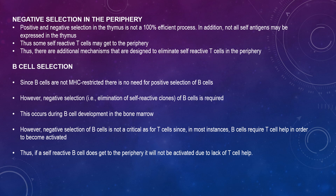If positive and negative selection in the thymus is not 100% efficient, and not all self-antigens can be expressed in the thymus, some self-reactive T cells can reach the periphery. Additional mechanisms are designed to eliminate self-reactive T cells in the periphery. With regards to B cell selection, since B cells are not MHC restricted, there is no need for positive selection of B cells. However, negative selection — meaning the elimination of self-reactive clones of B cells — is required.